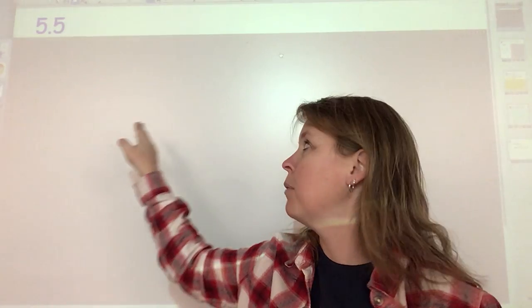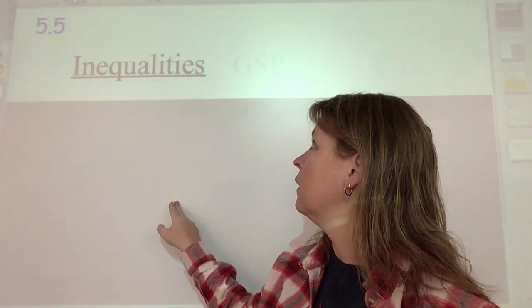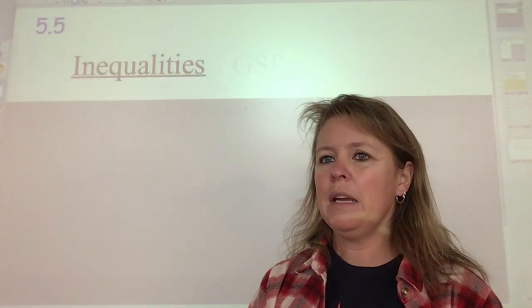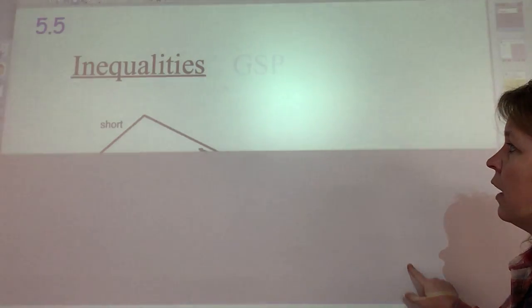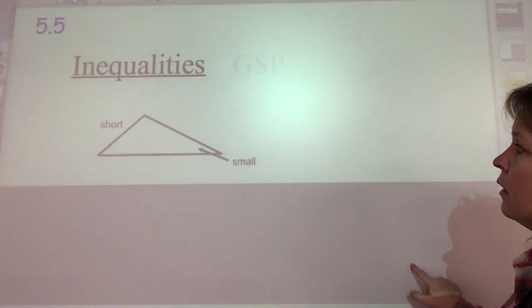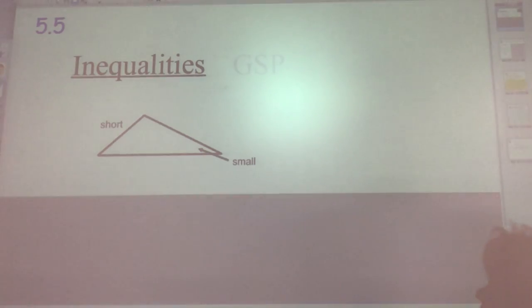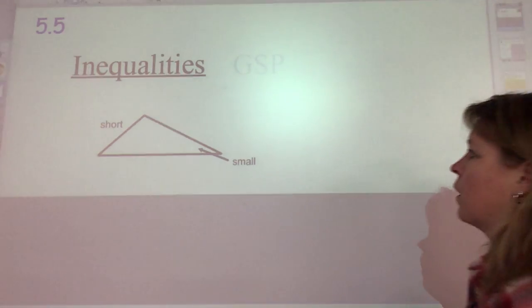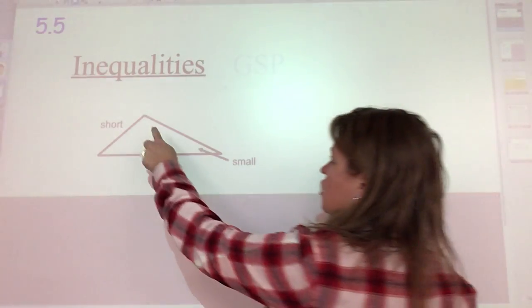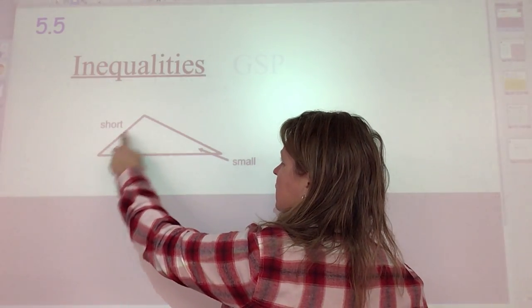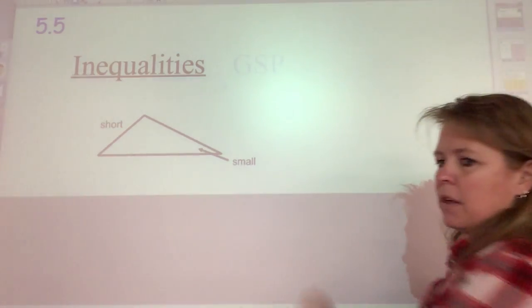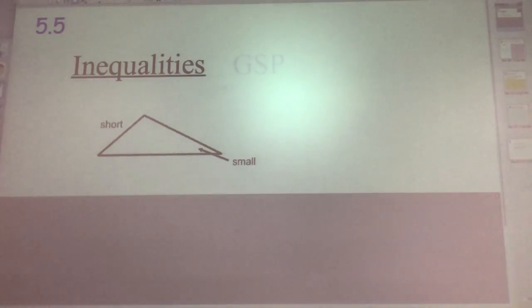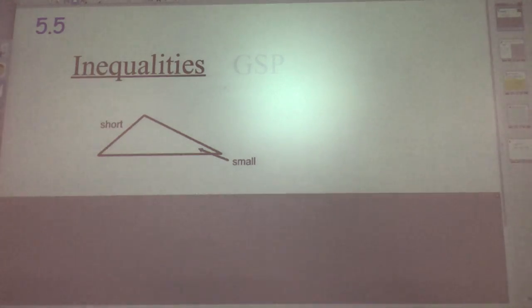Geometry section 5.5 — we are going to work with some inequalities on a triangle. What you notice on this triangle is that wherever the shortest side is, it's always going to be across from the smallest angle.